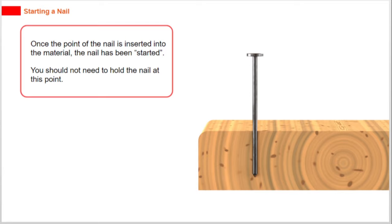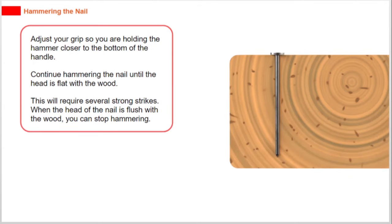Adjust your grip so you are holding the hammer closer to the bottom of the handle. Continue hammering the nail until the head is flat with the wood. This will require several strong strikes. When the head of the nail is flush with the wood, you can stop hammering.